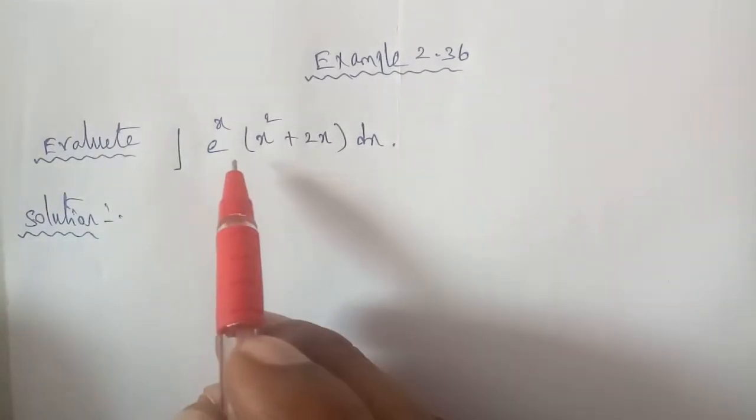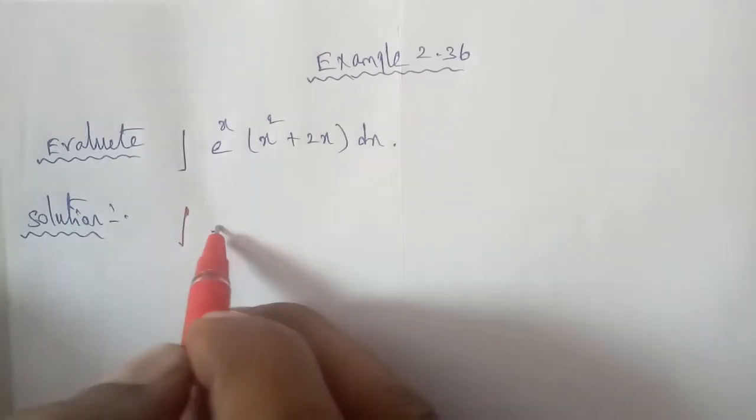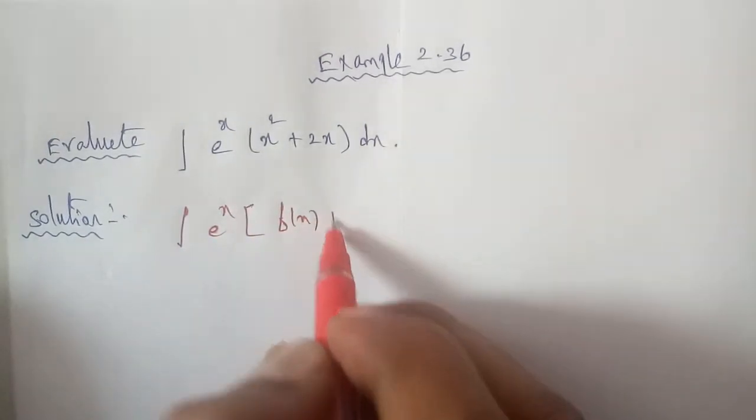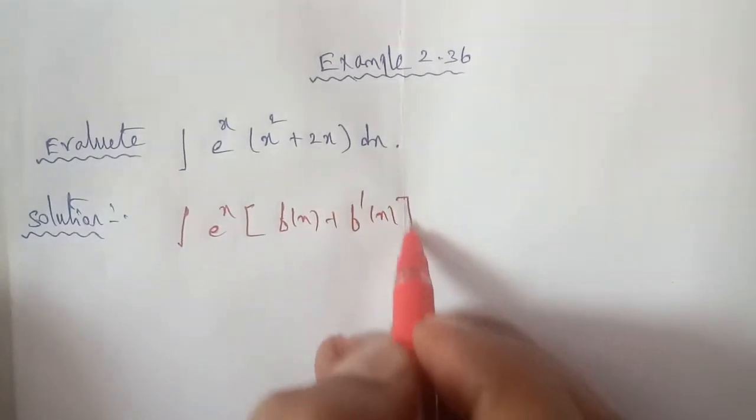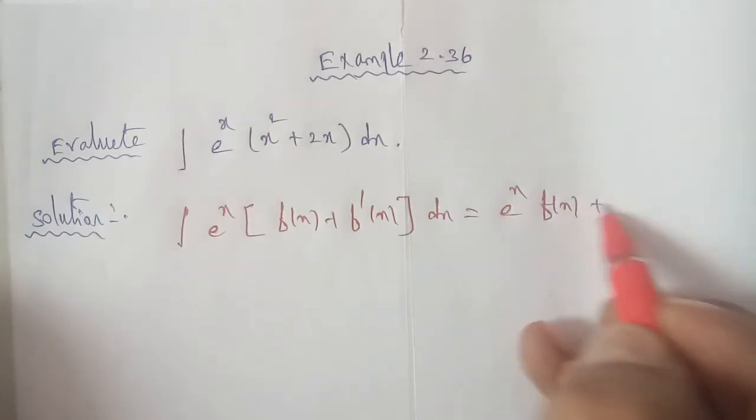So in this summing type, we'll use the formula. The formula is: integral e power of x, f of x plus f dash of x dx is equal to e power of x, f of x plus c.